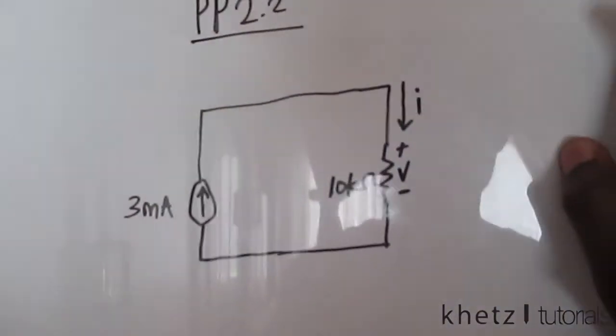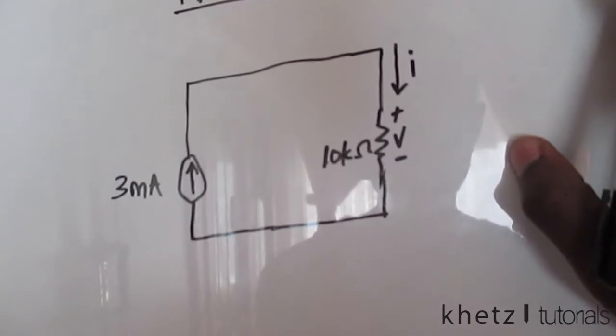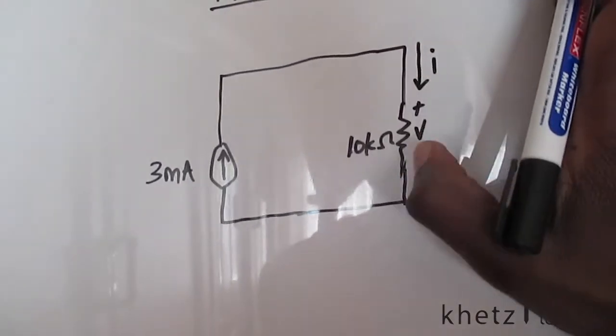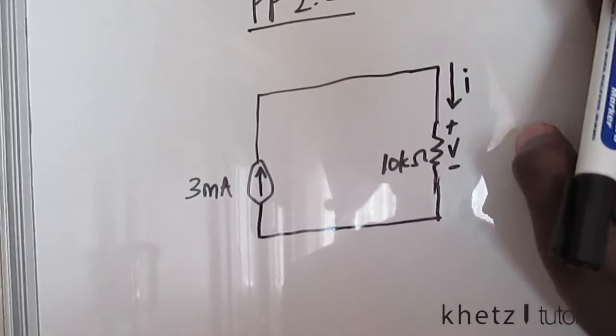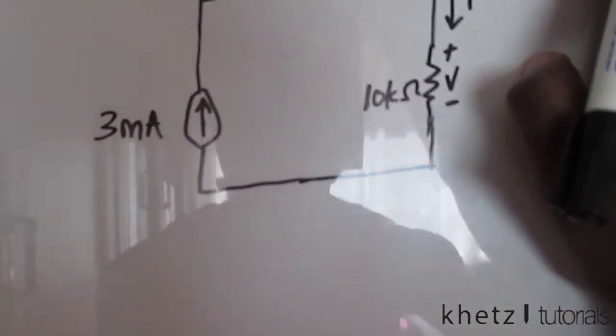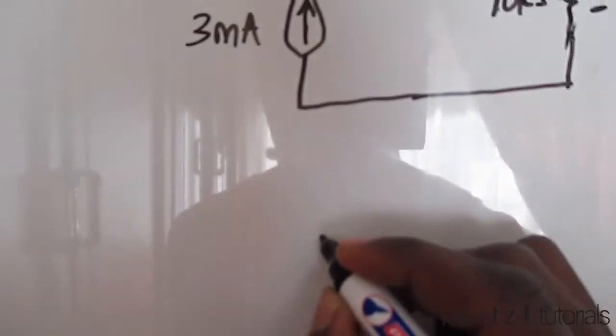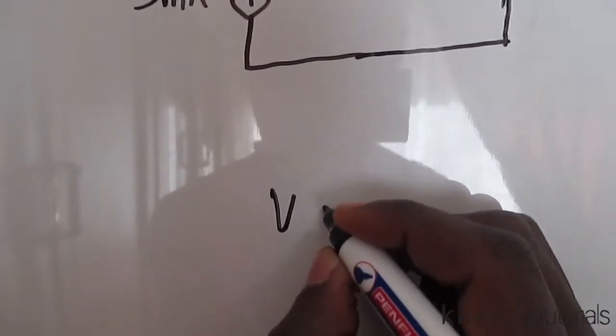Let's start with finding the voltage. We know that V equals IR.